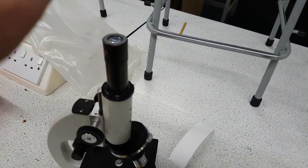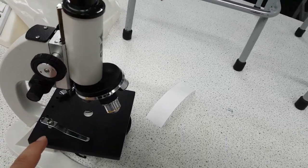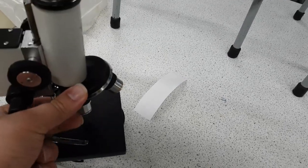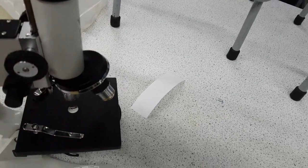This is the eyepiece because that's where you look. Down here we have the stage, that's where you put your slide on. Here we have the objective lens. Now the red one is the least magnifying and it has the biggest field of view.